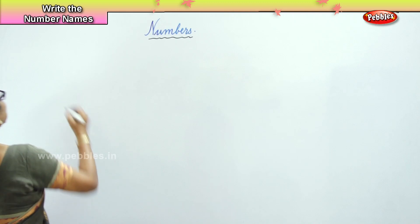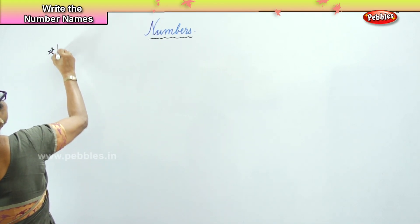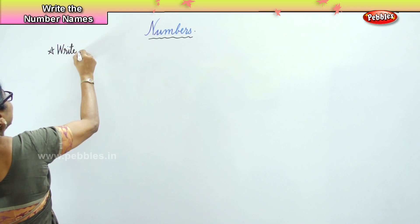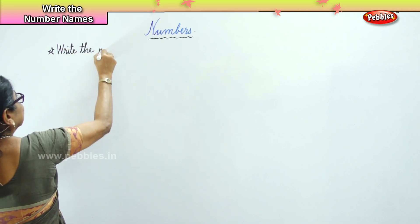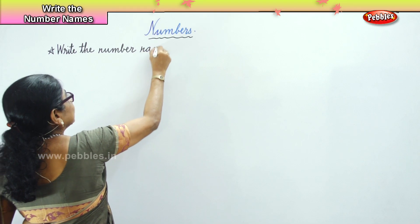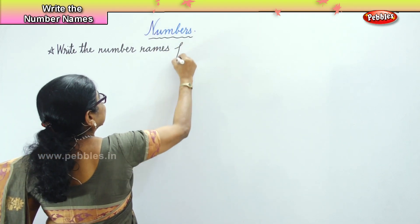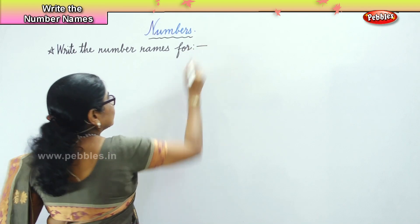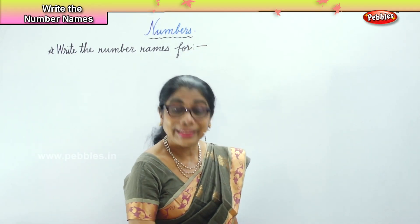Children in Level 3, we have done numbers 1000 to 10,000. Now let us learn to write the names. I give you the number and you learn to write their name — write the number names for whatever number I give you.